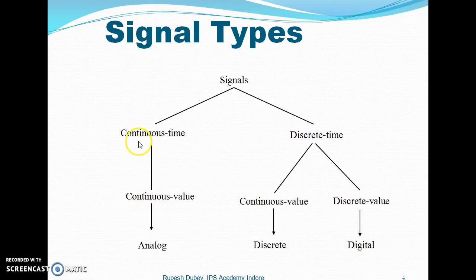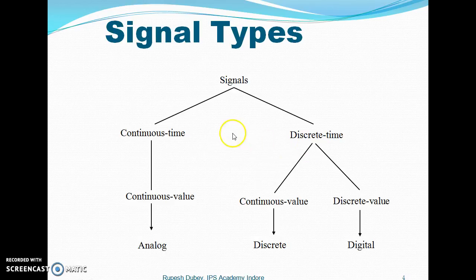For instance, if we talk about continuous time, and we have x and y axes, the y-axis representing the time scale will be our continuous scale which is continuously varying. We have signals available at 1, 2, 3, 4, and so on. Continuous value means we have values available between fixed intervals.